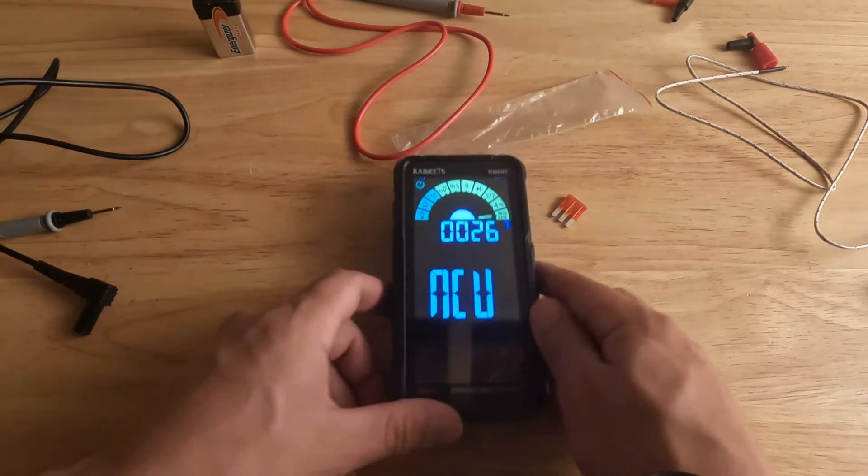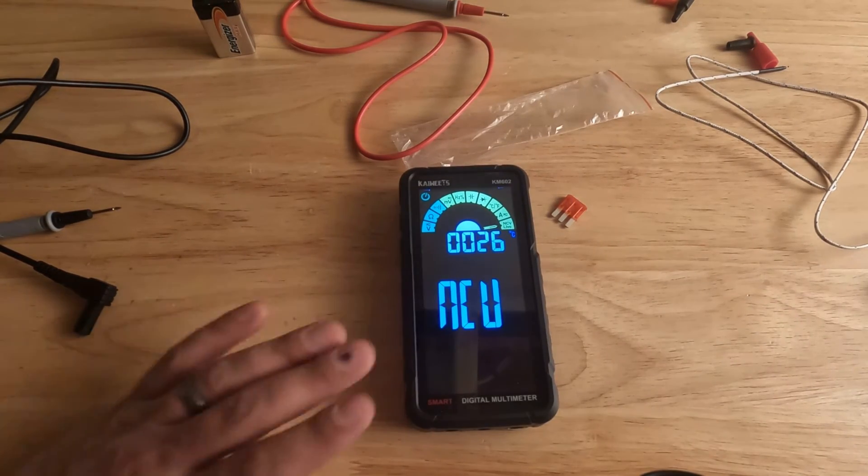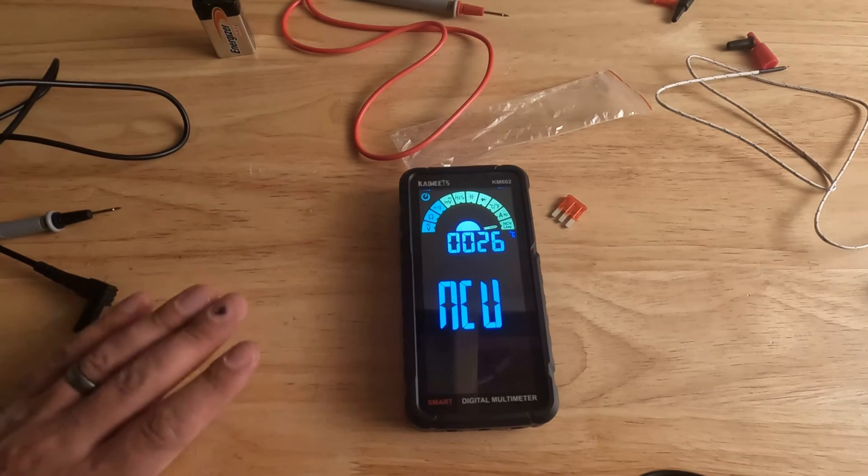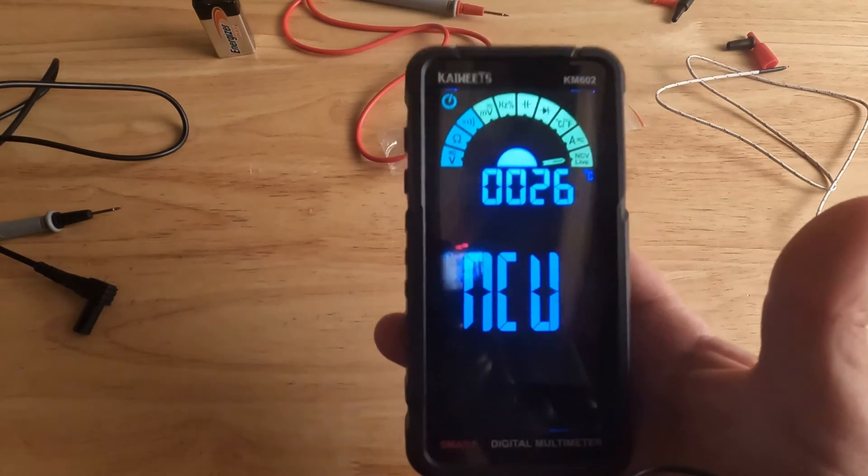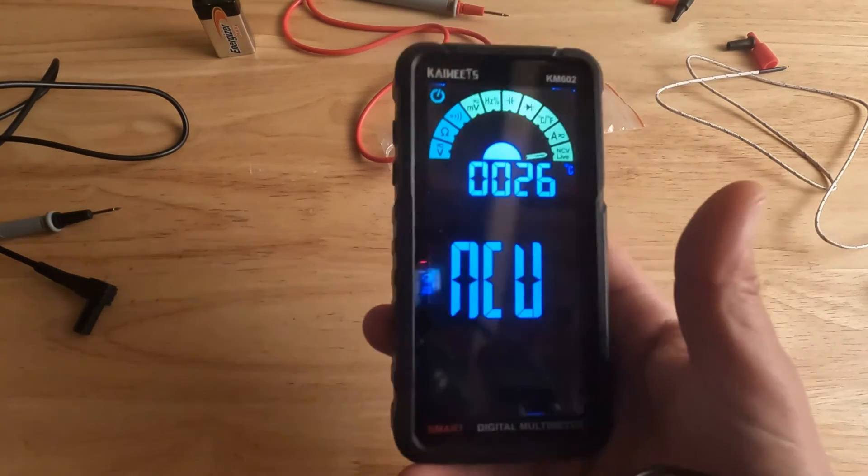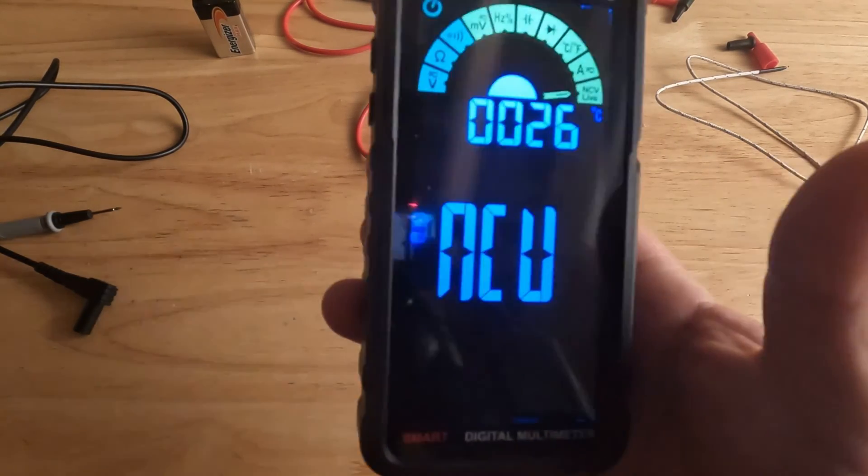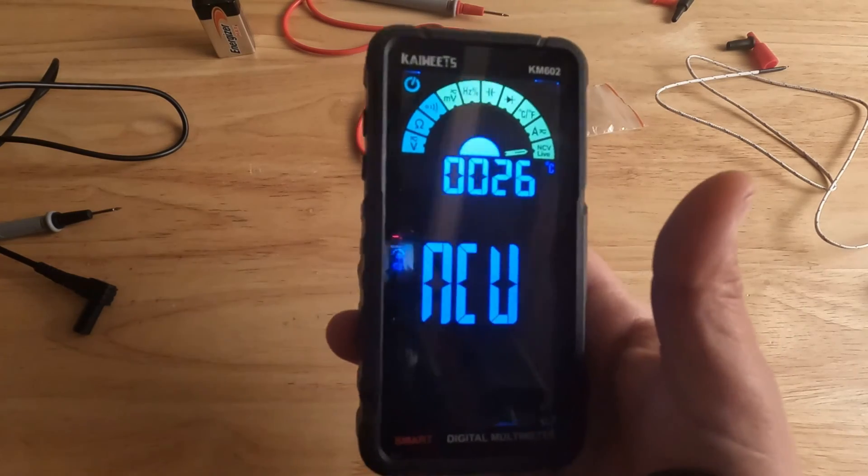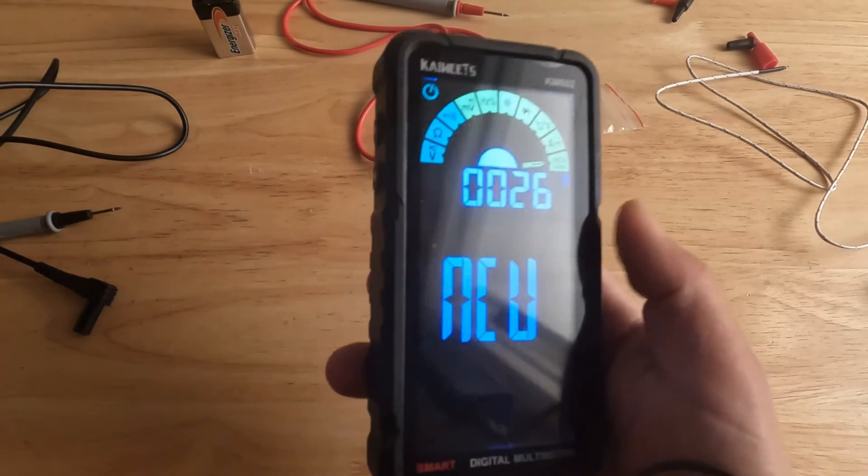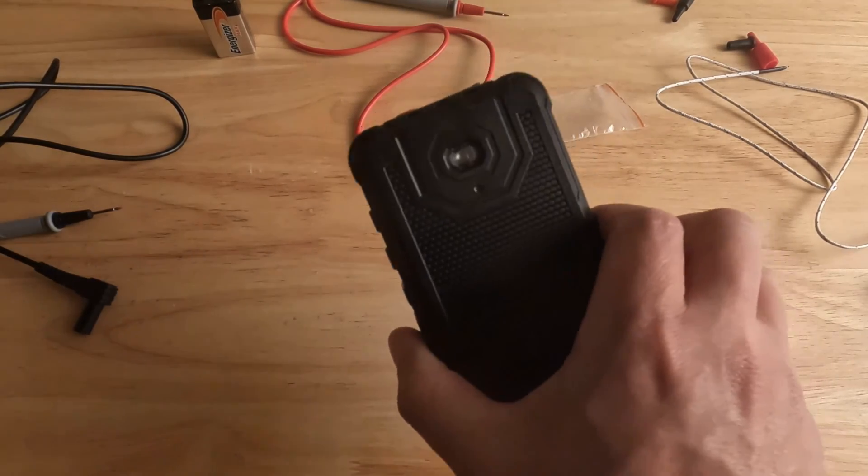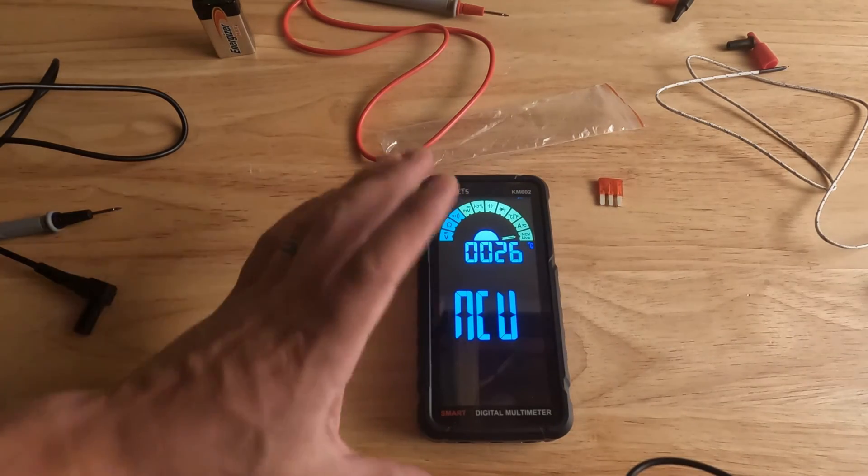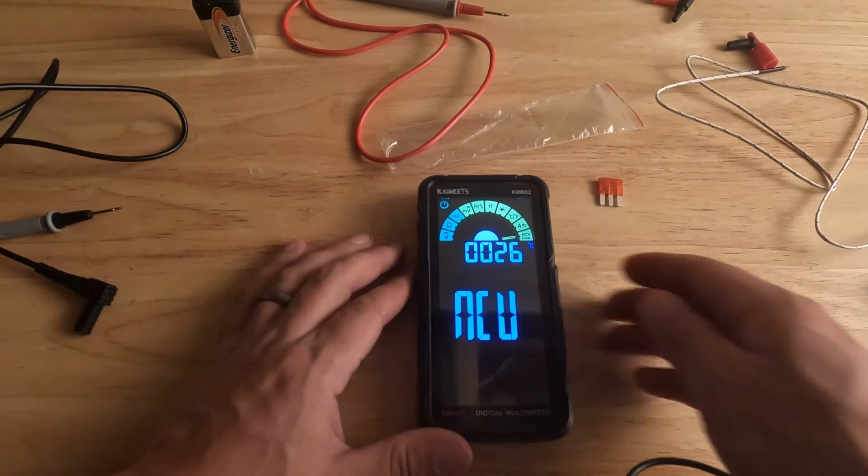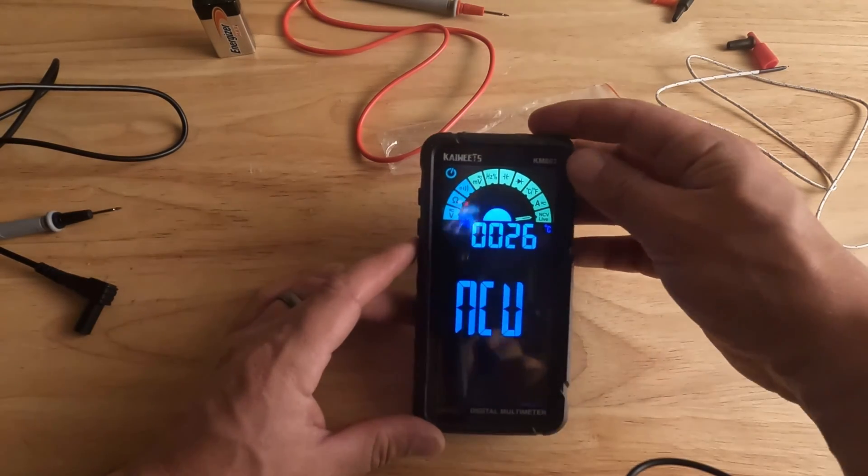Yeah guys, that's the Kaiweets KM602 multimeter. If you guys have any questions, be sure to leave them in the comments below. Also be sure to like, subscribe to the channel, and be sure to check the link in the description on where you could buy this. As an affiliate member, if you click on that link and buy this, I do get a small percentage. It goes towards helping the channel grow, helping me create more content like this that helps you guys. So yeah guys, that pretty much sums up this video. Be sure to reach out with any questions, and yeah, thanks for watching. We'll see you next time.